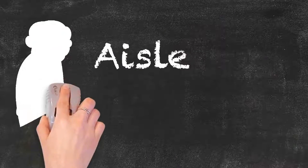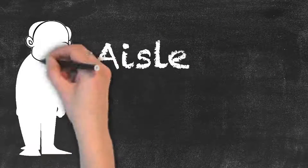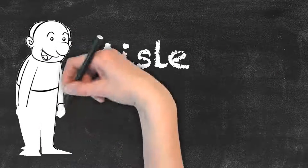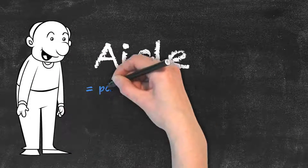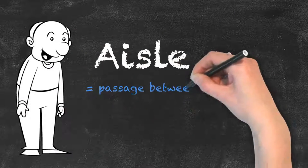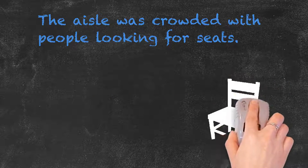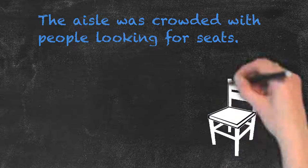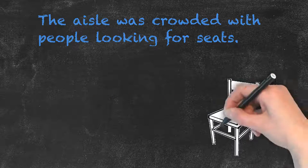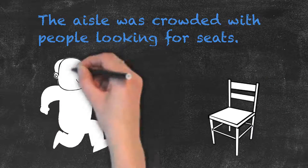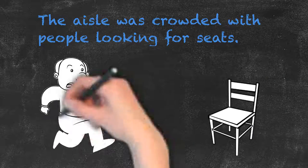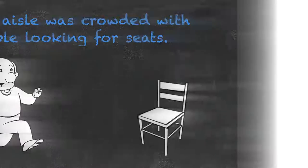An aisle is a passage between rows of seats in a church, in a theater, on an airplane, or between shelves in a supermarket. The aisle was crowded with people looking for seats.